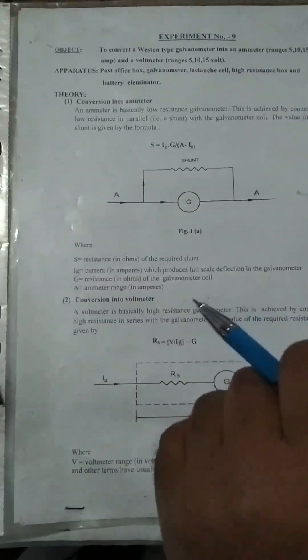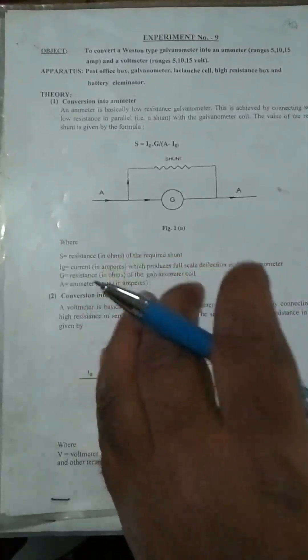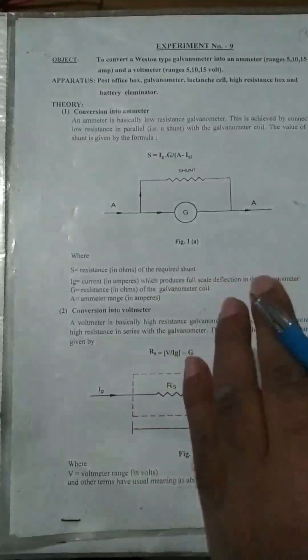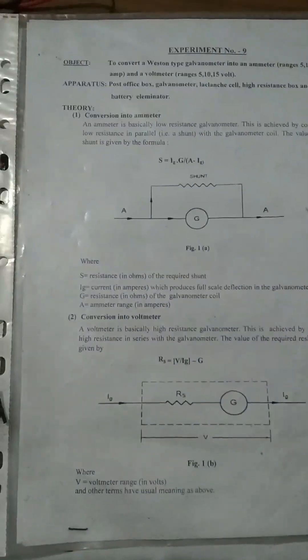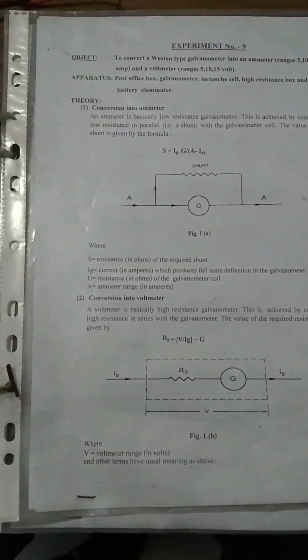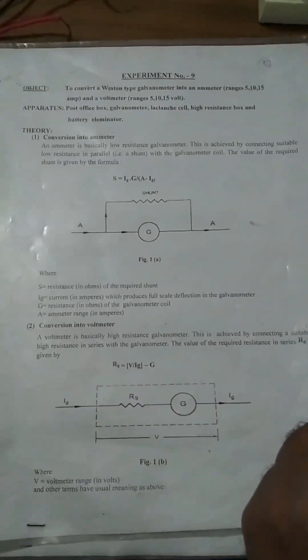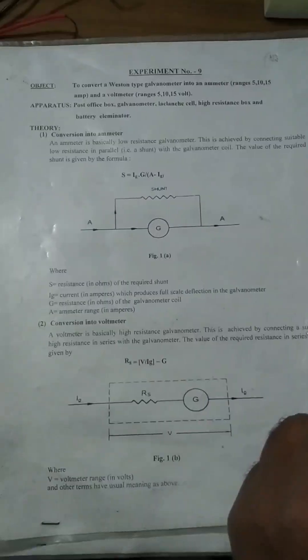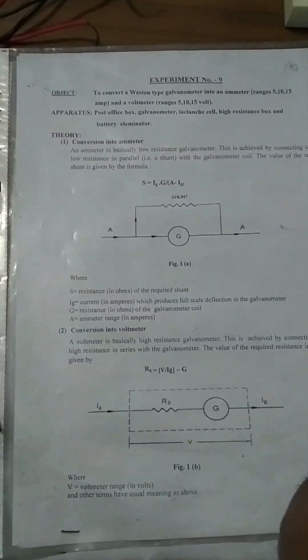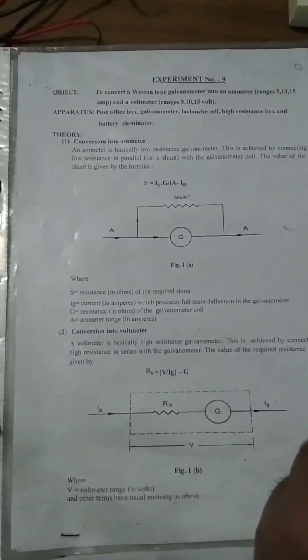Before starting this experiment, I would like to briefly explain what an ammeter and a voltmeter are. An ammeter is a current measuring device — essentially a special type of galvanometer with a very low resistance connected in parallel, called a shunt. A voltmeter is a voltage measuring device — a special type of galvanometer with a very high resistance connected in series. Thus, both ammeter and voltmeter are special types of galvanometers.